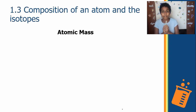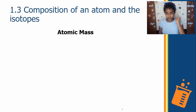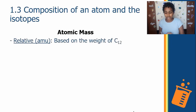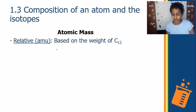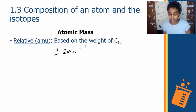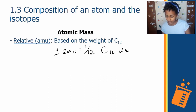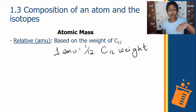Next, atomic mass. The first type is the relative atomic mass, which uses a specific unit called the atomic mass unit (AMU). One atomic mass unit is equal to 1/12th of the weight of carbon-12. We refer to the weight of all other elements using the atomic mass unit.